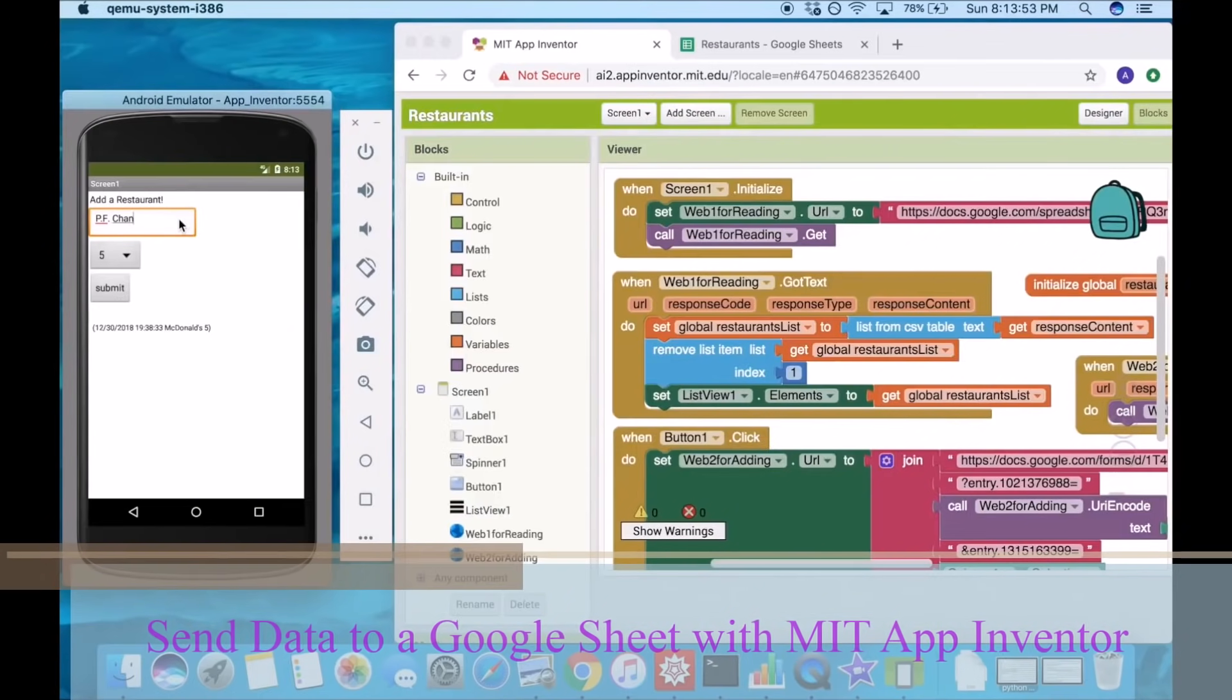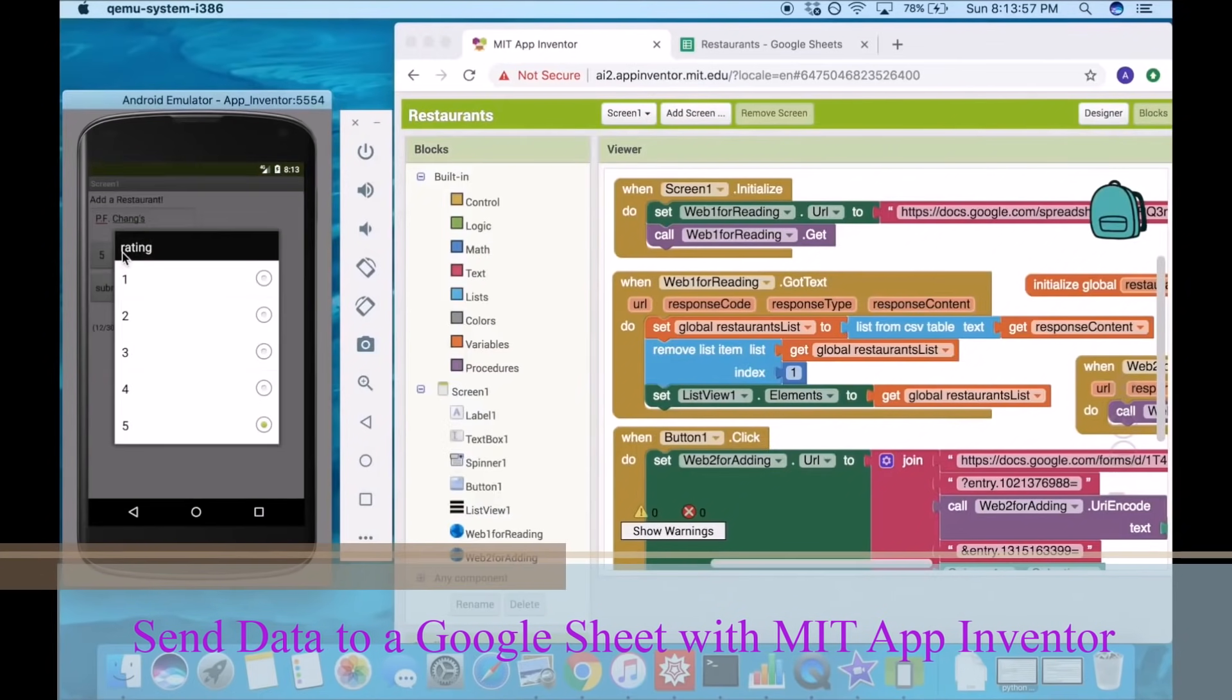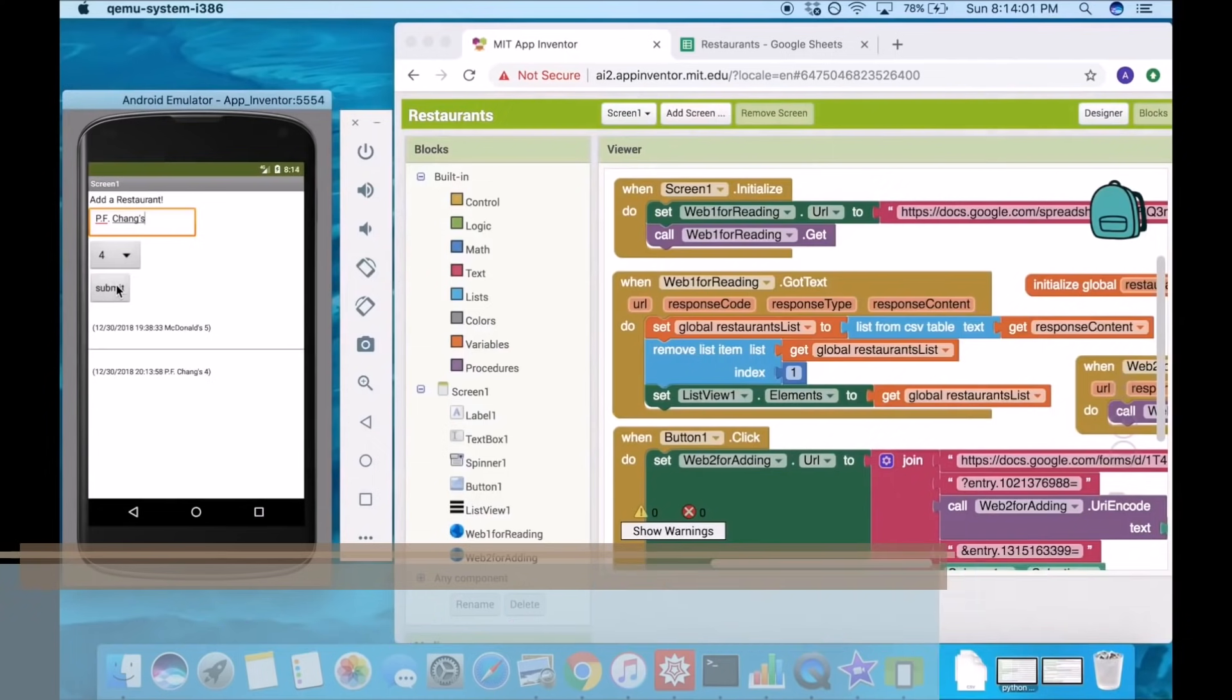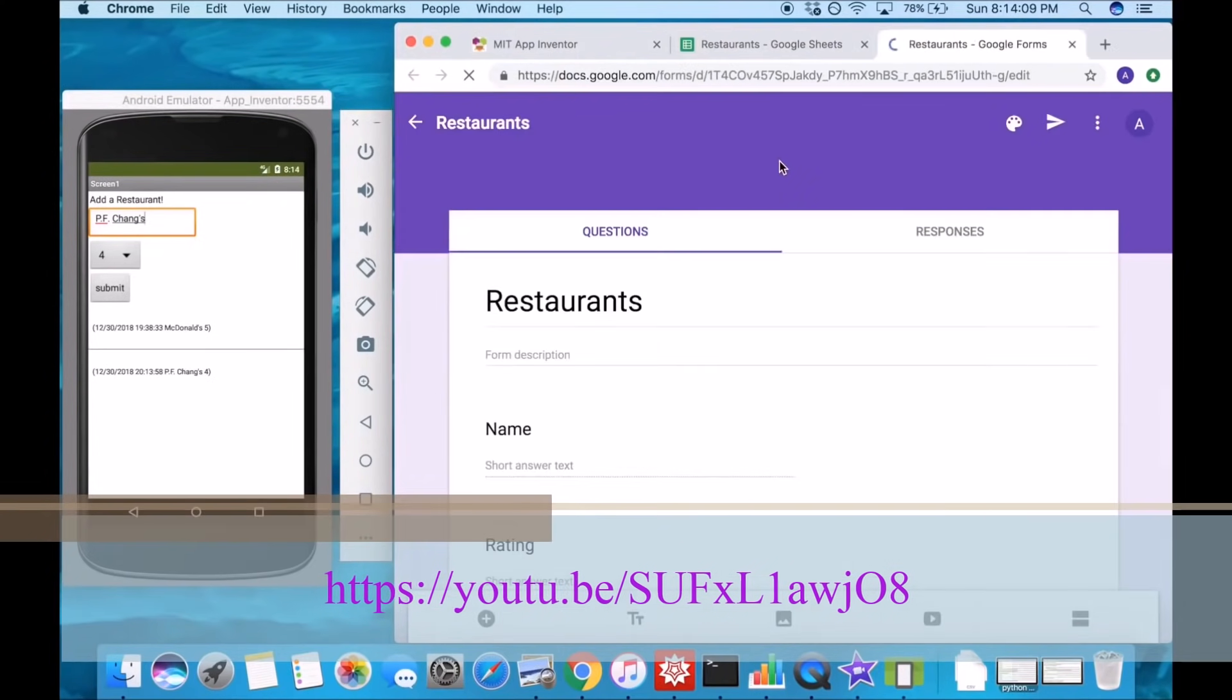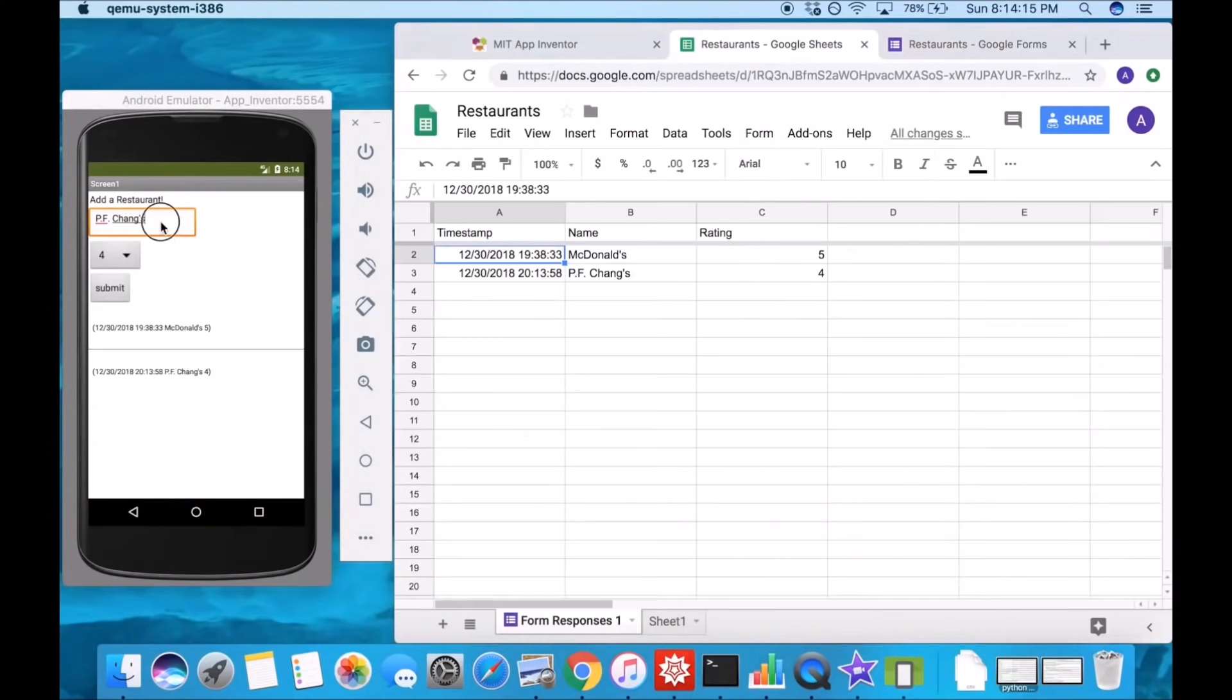In this tutorial, we will build an app that is a list of restaurants, and the user will be able to add more restaurants to it. We will integrate a form into the spreadsheet to allow the user to add to the sheet through the app.